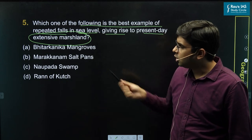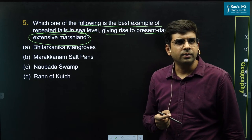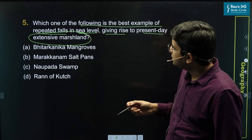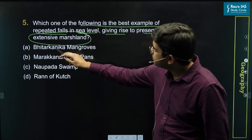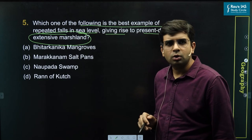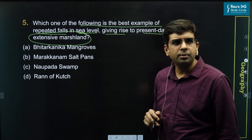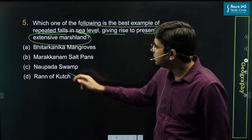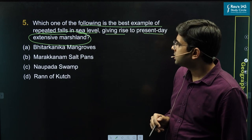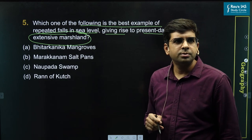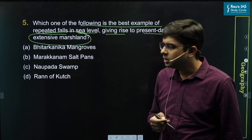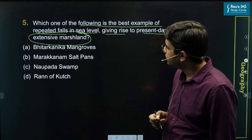Let's look at the options. Option A is Bhitarkanika mangroves. Option B is Marakanam salt pans. Option C is Naupada swamps. Option D is Rann of Kutch.